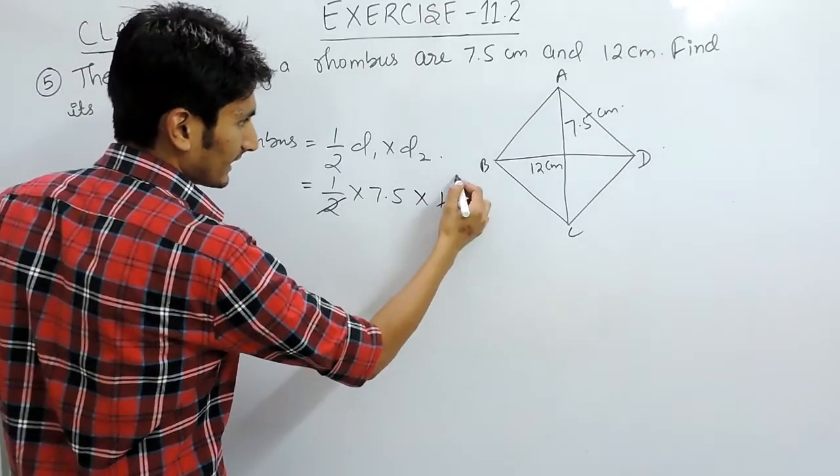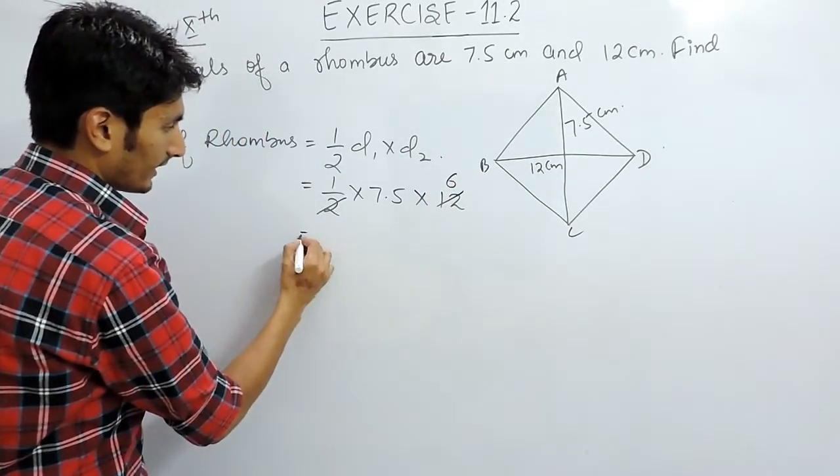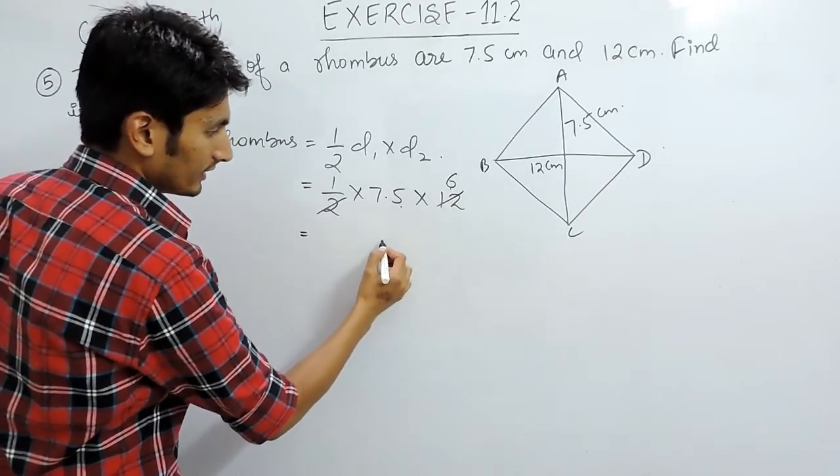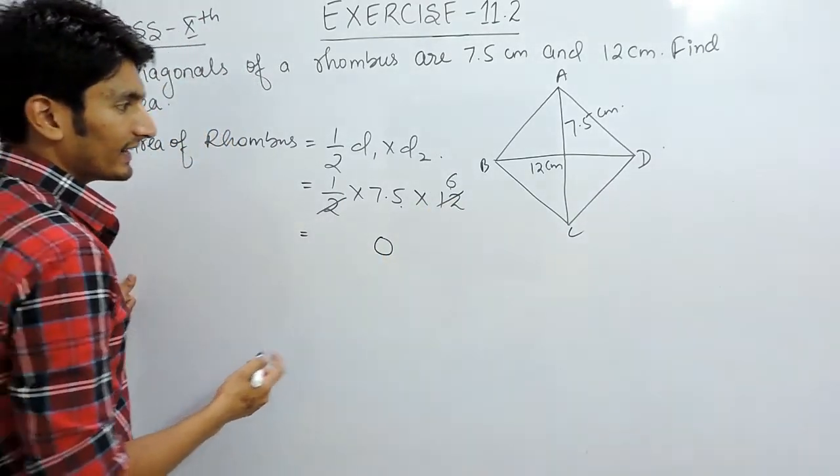Solving this, this can be cancelled 6 times. When we multiply 7.5 with 6, 6 into 5 is 30, carry 3.